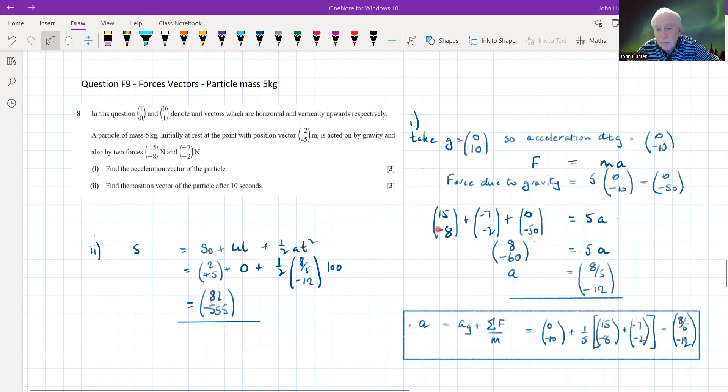So now we've got these three forces acting on the particle, and to work out their net effect, we just add them up, and that's going to equal the mass, which is 5 kilograms times the acceleration, this acceleration being a vector. So we need to just add those together, then divide through, and we get that. Then we divide through by a scalar of 5, and that gives us an acceleration of 8 fifths and minus 12.